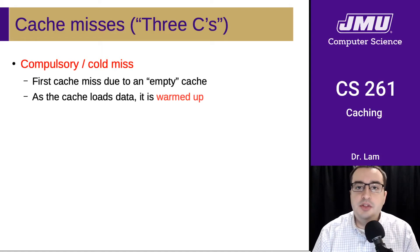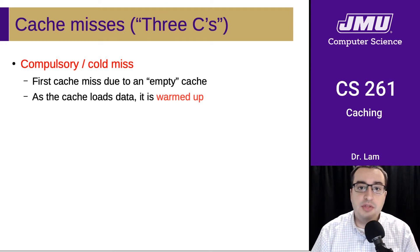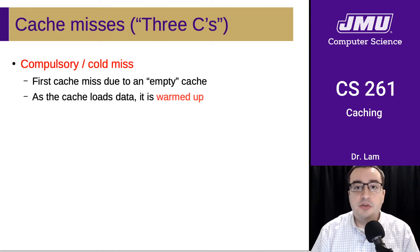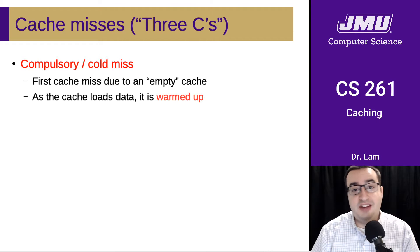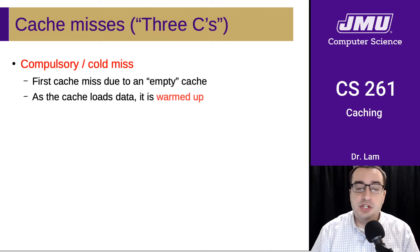Now let's examine the performance considerations of caching. We'll start by talking about the three different kinds of cache misses, sometimes called the three Cs. The first kind of miss is a compulsory or cold miss. This is because we've just started the machine and there's nothing in the cache, so we'll need to load every new value that we access initially.